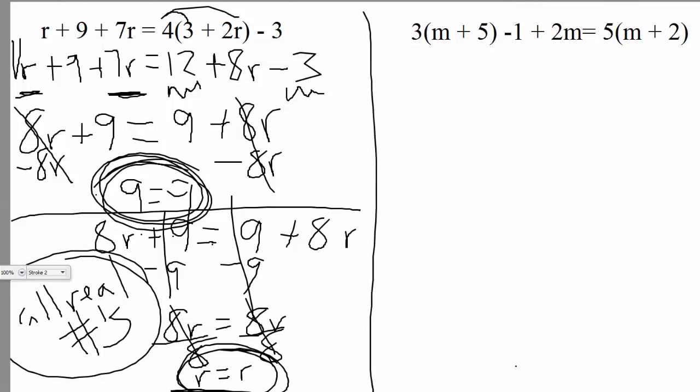So then let's take a look at this problem on the right-hand side and see what's going on with that one. Once again I do see that I have parentheses which means the distributive property. So distributing over here on the left-hand side, let's distribute that 3. That would give us 3m plus 15, and let's drop down that minus 1 plus the 2m. And let's distribute that right-hand side. Taking care of that would give us 5m plus 10.